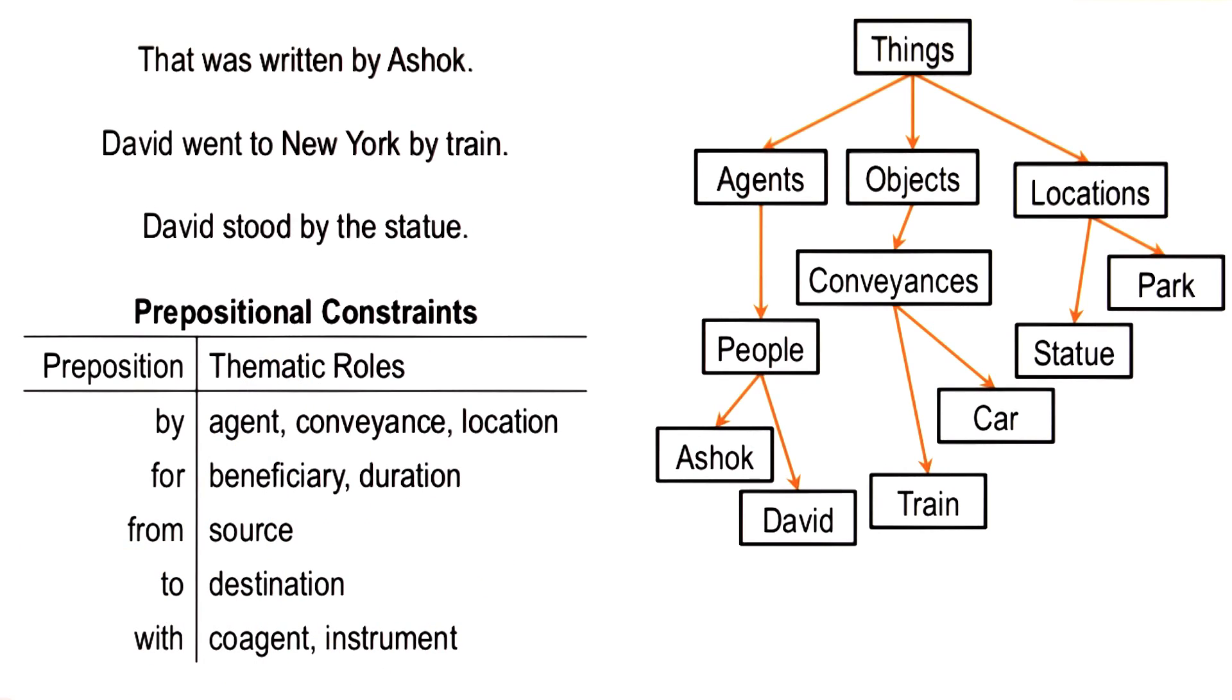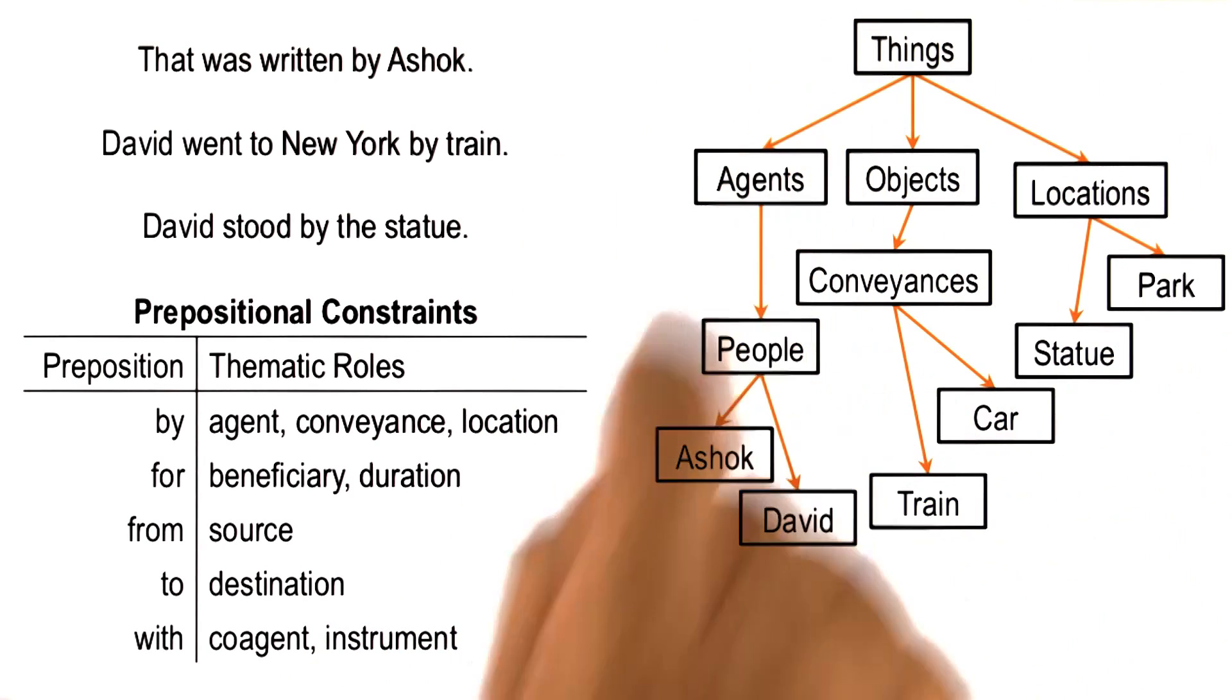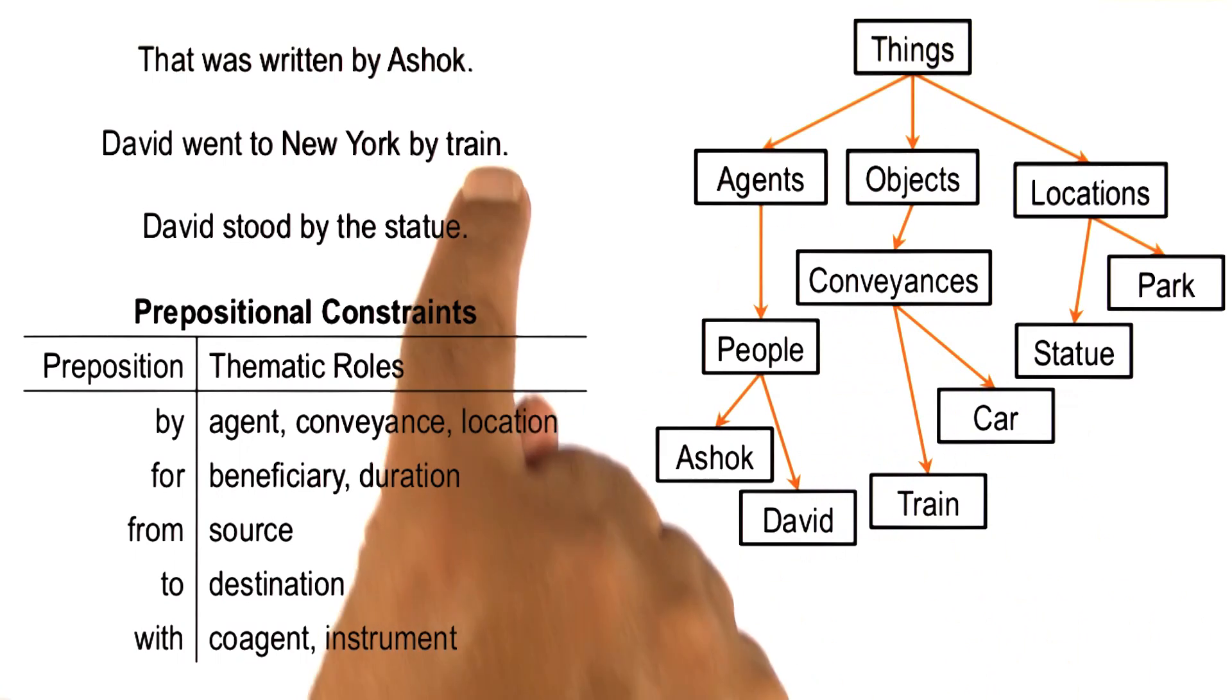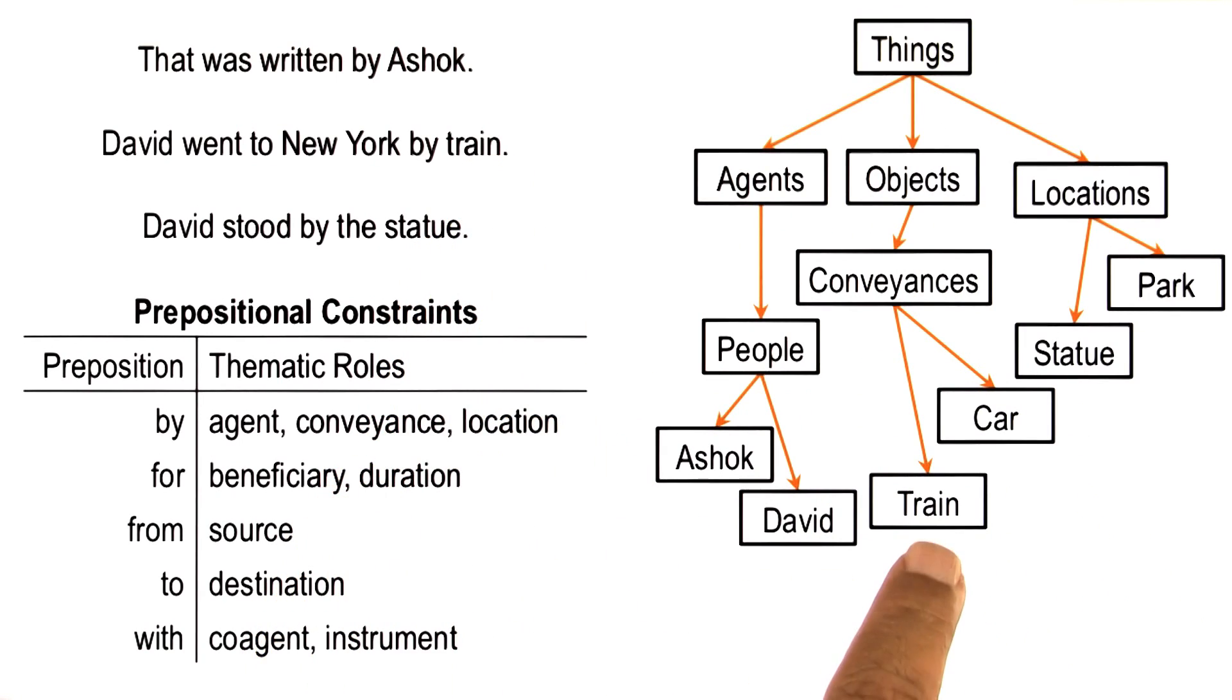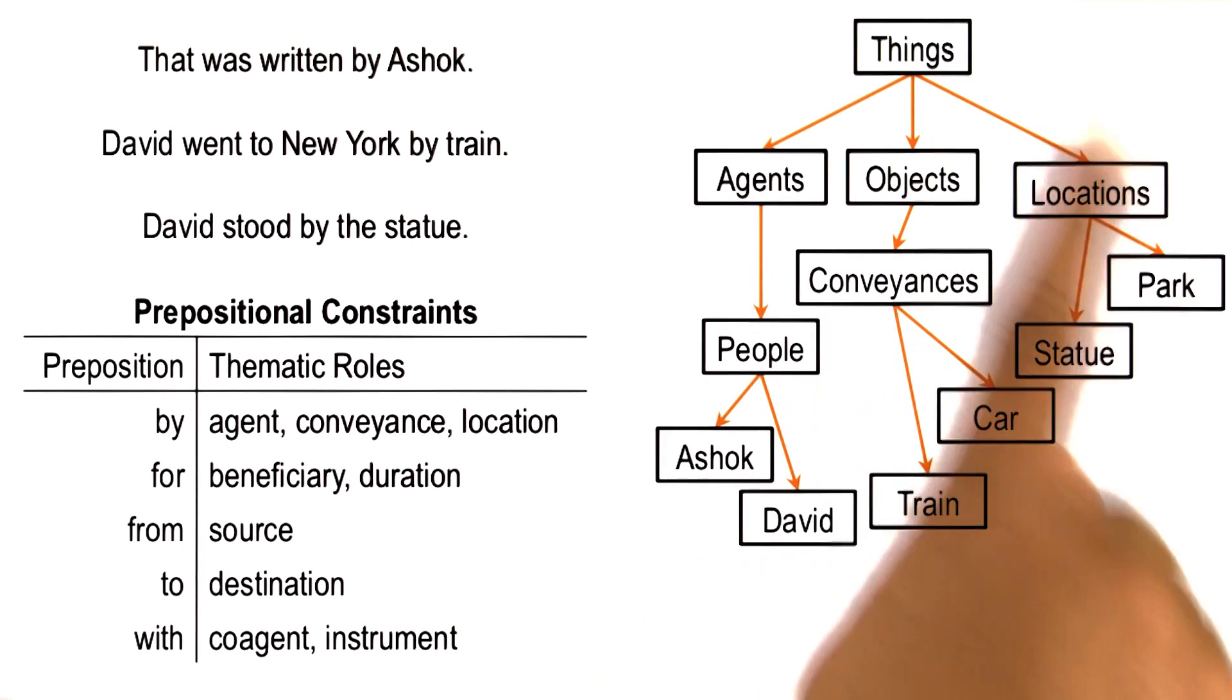that by here can refer to an agent, a conveyance, or a location. We also have this additional background knowledge. And this background knowledge tells us, that in this particular sentence, the train is referring to a conveyance, because train is a conveyance in this ontology.